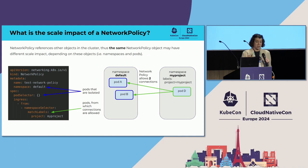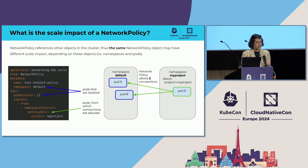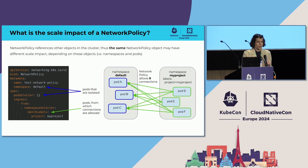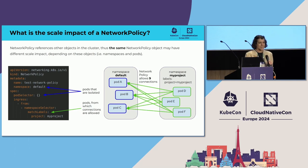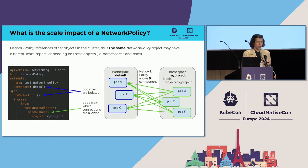Now if we create one extra pod B in the default namespace, the network policy is still exactly the same, but now it allows two connections. You can imagine creating a couple more pods and the number of connections that the exact same network policy allows will grow. This means that even a network policy with the exact same spec may have very different scale impact on the cluster. The scale impact depends not just on the spec of the object itself, but also on the other objects that exist in the cluster — especially namespaces, pods, and their labels — which makes scale testing quite tricky.